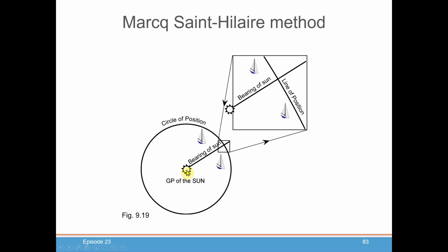If you remember what that's telling you is you are on some position in this circle from that height because everybody on this circle, this exact same distance from the GP, will read the exact same sextant reading. So what we need to do is find out where we are on this circle.